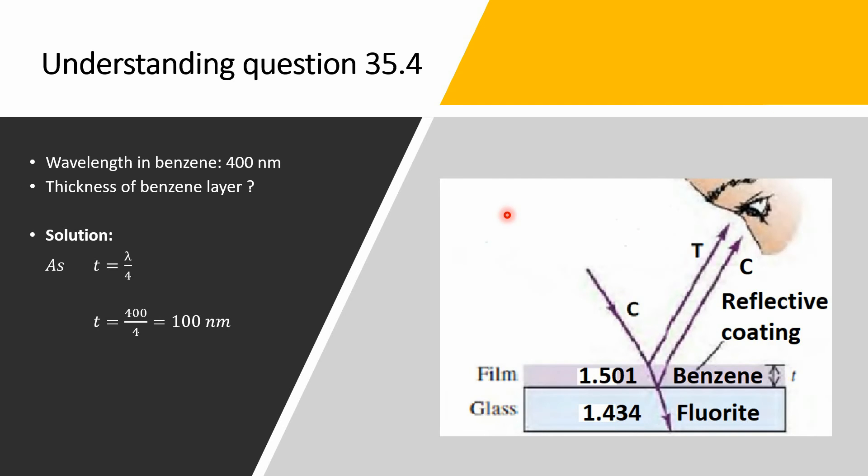Let us take another example. We have given a glass medium made of fluoride with refractive index of 1.434. A thin layer is deposited on this glass medium made up of benzene whose refractive index is given as 1.501.